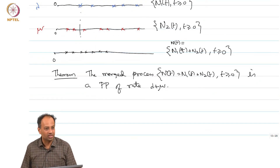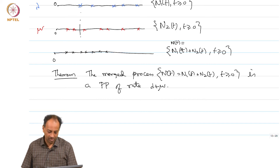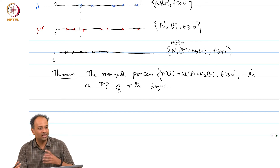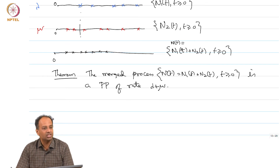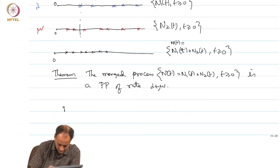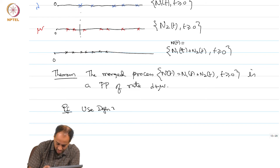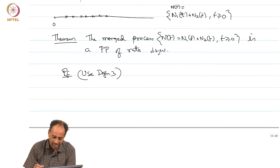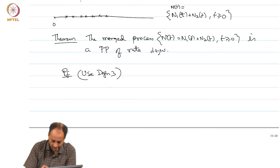So how do you prove this theorem? You can presumably use any of the three definitions, since they are all equivalent. In this case, perhaps the easiest one to use is the micro-slots view — Definition 3. So the proof will use Definition 3, which is the easiest way to prove this. Basically, consider a little delta time slot.